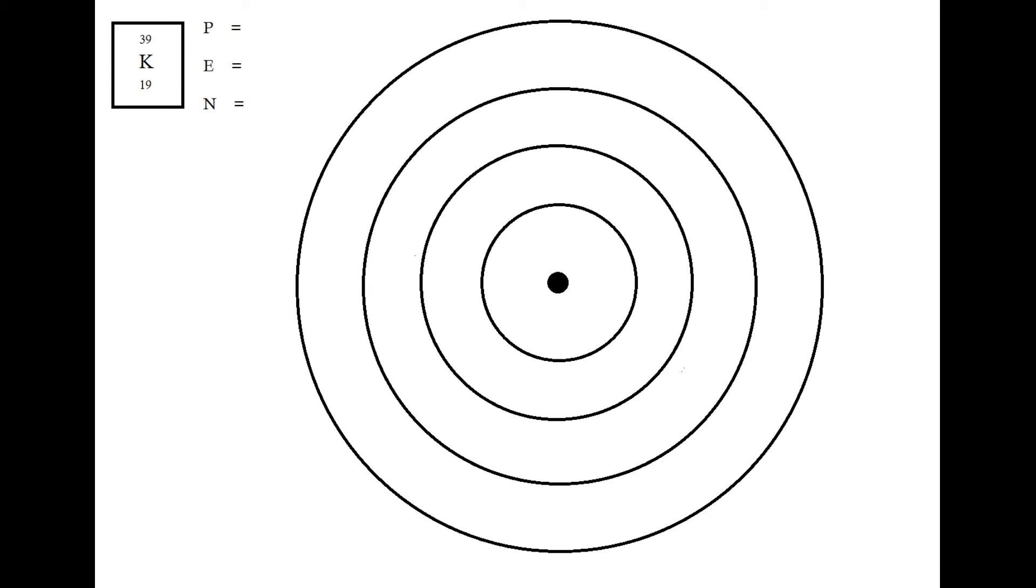So we're going to start off, and again we're going to do p-e-n. So as we know, the atomic number gives us the number of protons, and the number of protons is the same as the number of electrons in an atom. We then do that little calculation, so 39 take away 19 to figure out the number of neutrons, which is 20. Of those numbers, we're only really interested in the electrons while drawing ions, so I'm just going to concentrate on that 19.